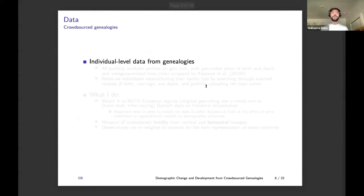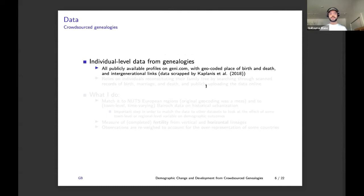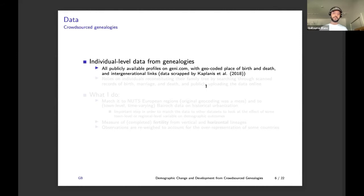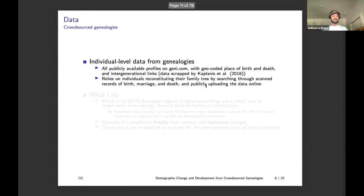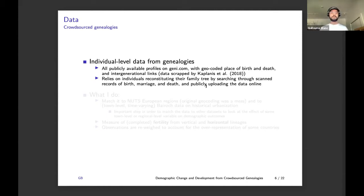This is individual-level data from genealogists. Basically it consists of all publicly available profiles on the website geni.com, with geocoded place of birth and death and intergenerational links. The data was scraped by Kaplanis et al., computer scientists, in a paper published in Science in 2018. It relies on individuals reconstituting their family tree by searching through scanned records of birth, marriage, and death and publicly uploading the data online. Kaplanis et al. scraped everything and also did careful matching in order to avoid duplicates in the trees.